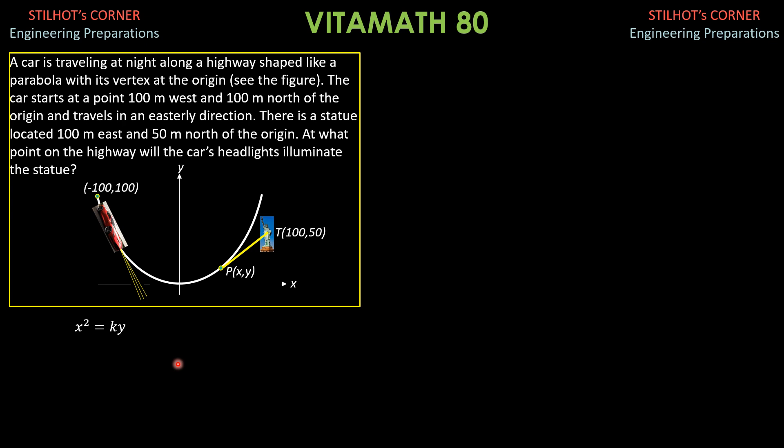If not, then I could say that you forget your experience with algebra or in curves, coordinates, in analytic geometry. So, let's substitute the coordinates of this point. Negative 100 quantity squared equals k times 100. So, that k is equal to 100 also. Having found k, the equation of the parabola therefore is x squared equals 100 times y.